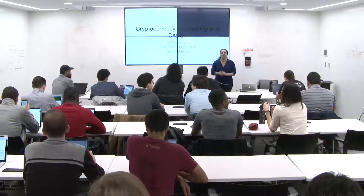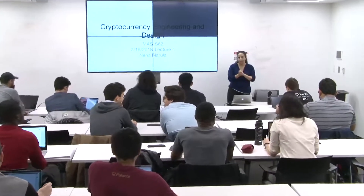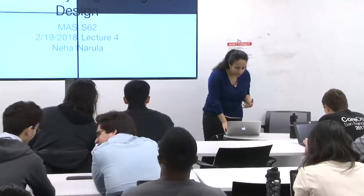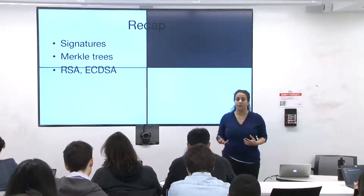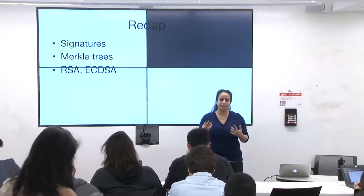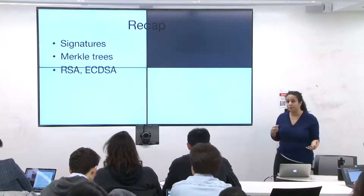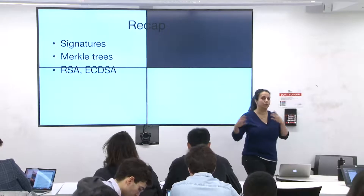OK, let's get started. I hope everybody had a great long weekend. So I'm teaching today, and today we're going to be talking about transactions. Just to recap where we've been so far, Taj has explained signatures in Bitcoin — in particular RSA and ECDSA — and told us about Merkle trees. These are some of the underlying primitives we need to know about to understand how most blockchains today are constructed. Now let's start to put them together and understand what goes into a blockchain.